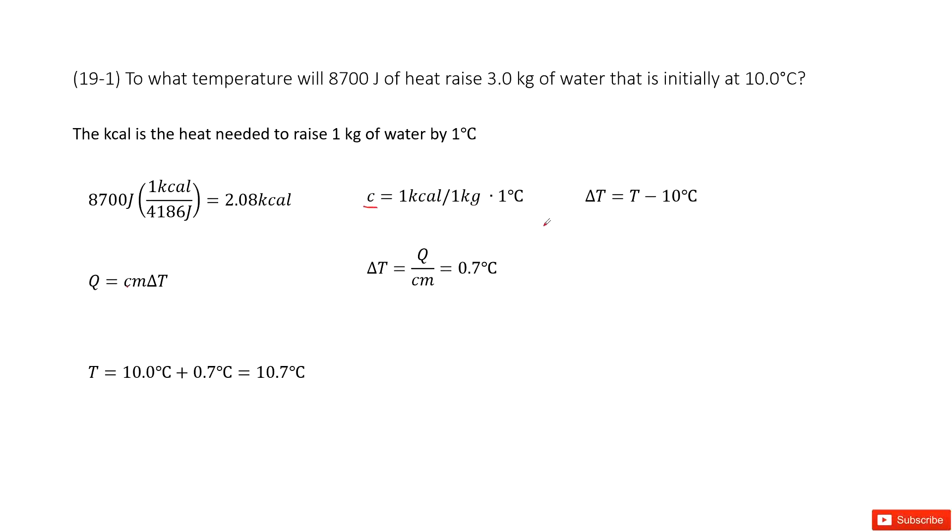Next, we find the temperature change. We write the final temperature as T, which we need to find, minus the initial temperature of 10°C. Now you can see in this equation, Q is given, c is constant, m is given, and only T is unknown.